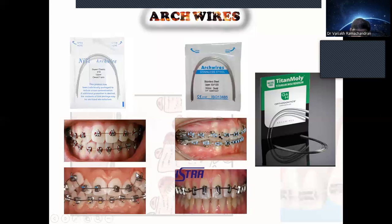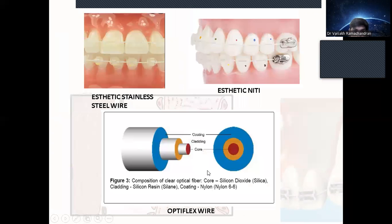For example, in a crowded case, we can use NiTi wire for initial alignment. Wires are also available in aesthetic types in addition to metallic wires.